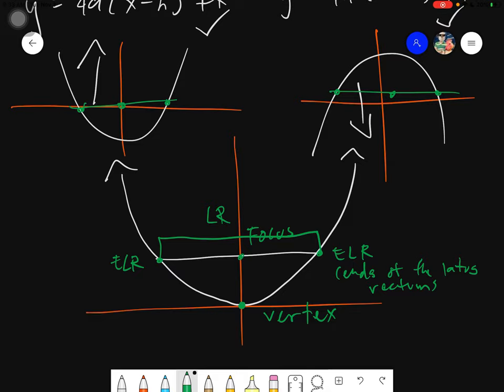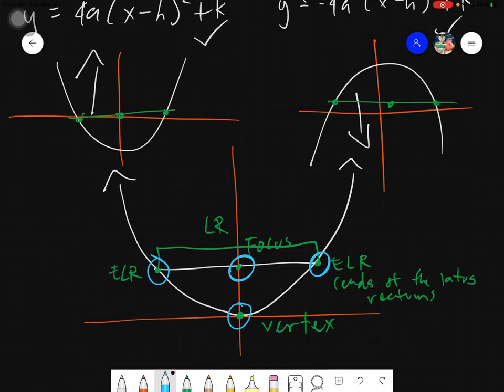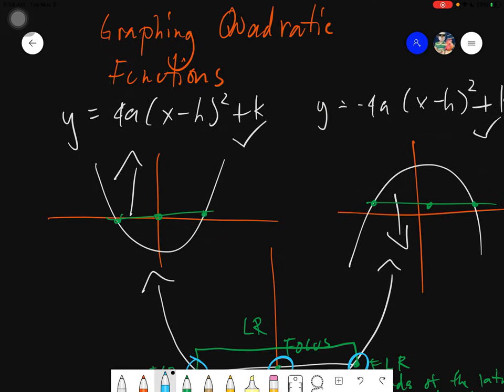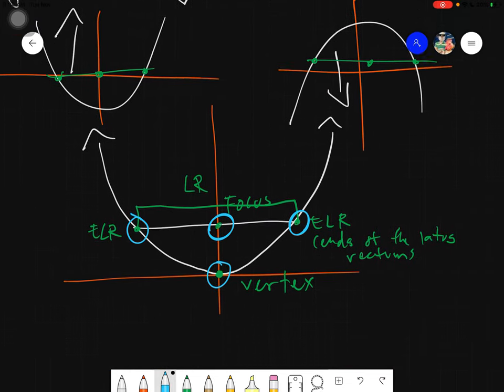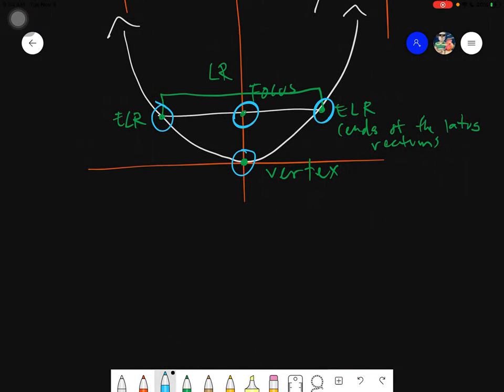And of course, this entire line is called the LR, the lattice rectum. It's not that important. What's important for us would be to get the following points: the two ELRs, the focus, and then of course the vertex. And you don't need to get any other points. These points are actually very visible in our vertex form. Let's identify what are the coordinates of the vertex, the focus, and our ELRs.